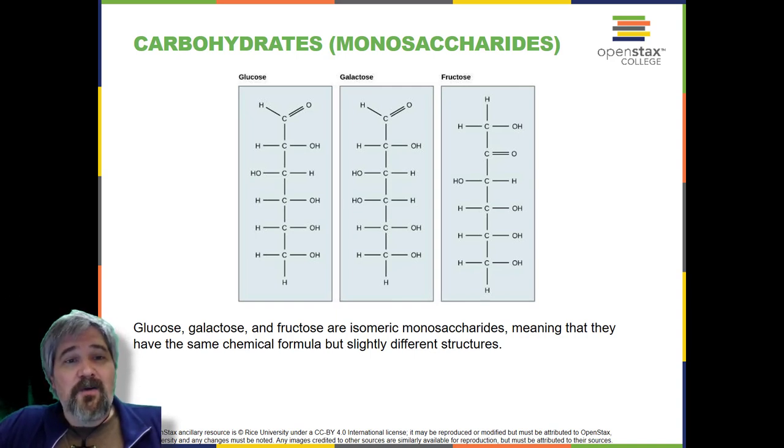In monosaccharides, the number of carbon atoms usually ranges from 3 to 6. Most monosaccharide names end with the suffix "-ose". Depending on the number of carbon atoms in the sugar, they may be known as trioses (3 carbon atoms), pentoses (5 carbon atoms), and hexoses (6 carbon atoms).